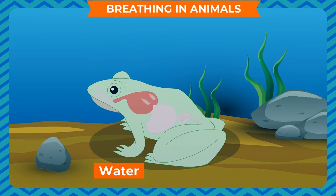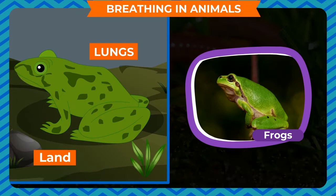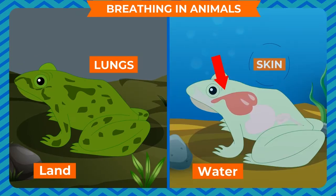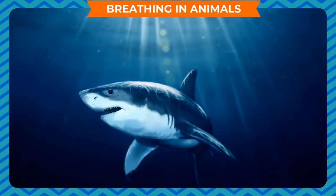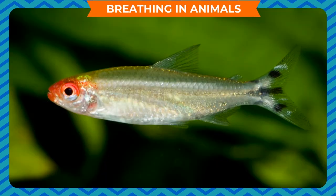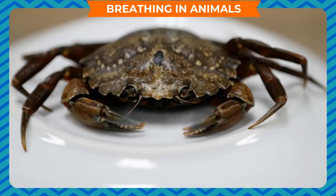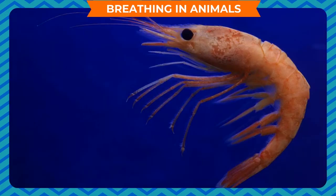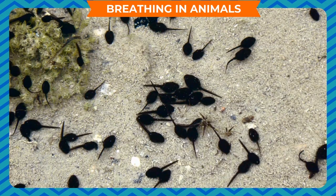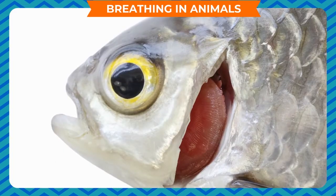Amphibians breathe through gills in the water when they are young. As they grow into adults, they breathe through their lungs on land and through their skin in the water.